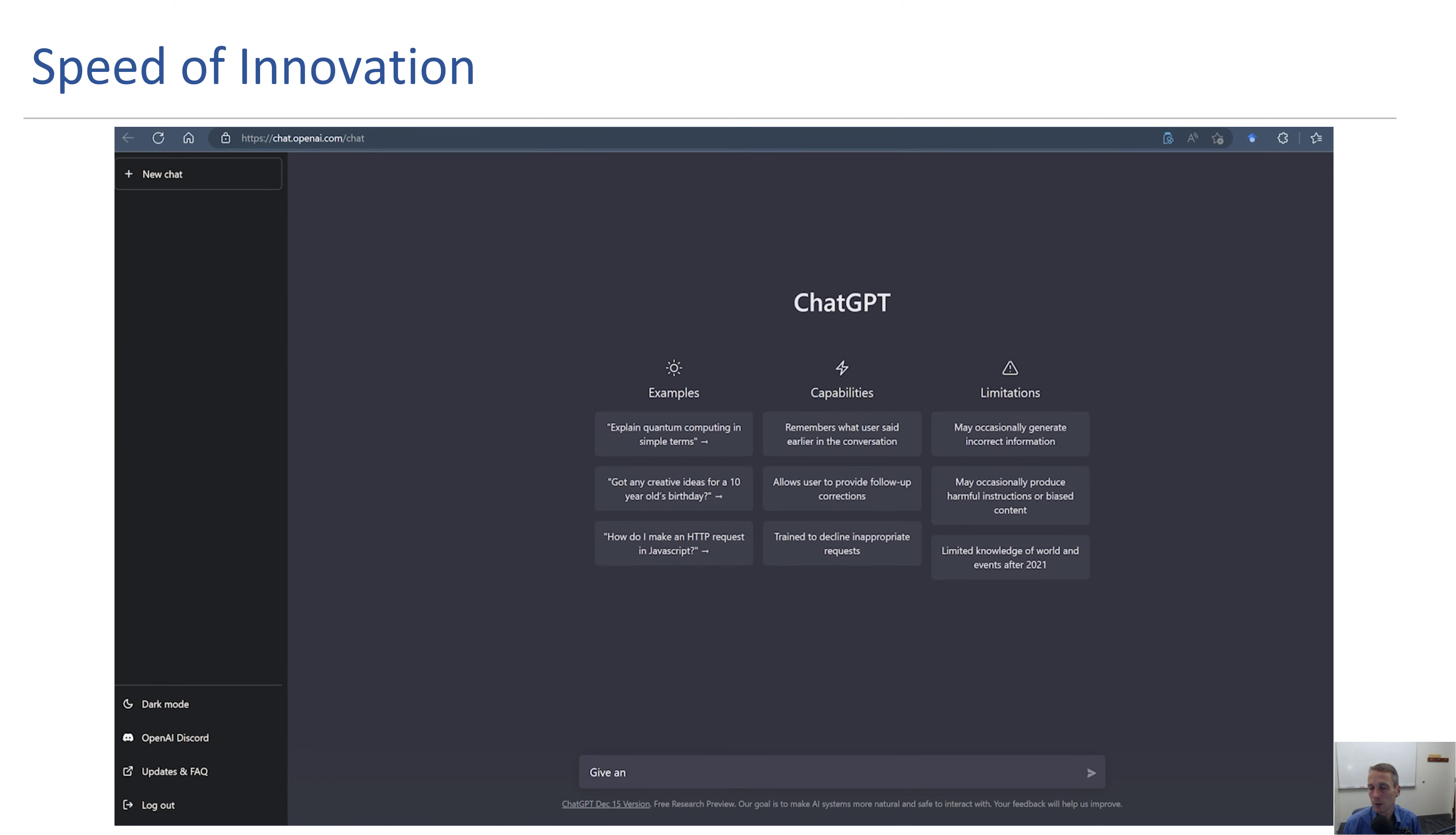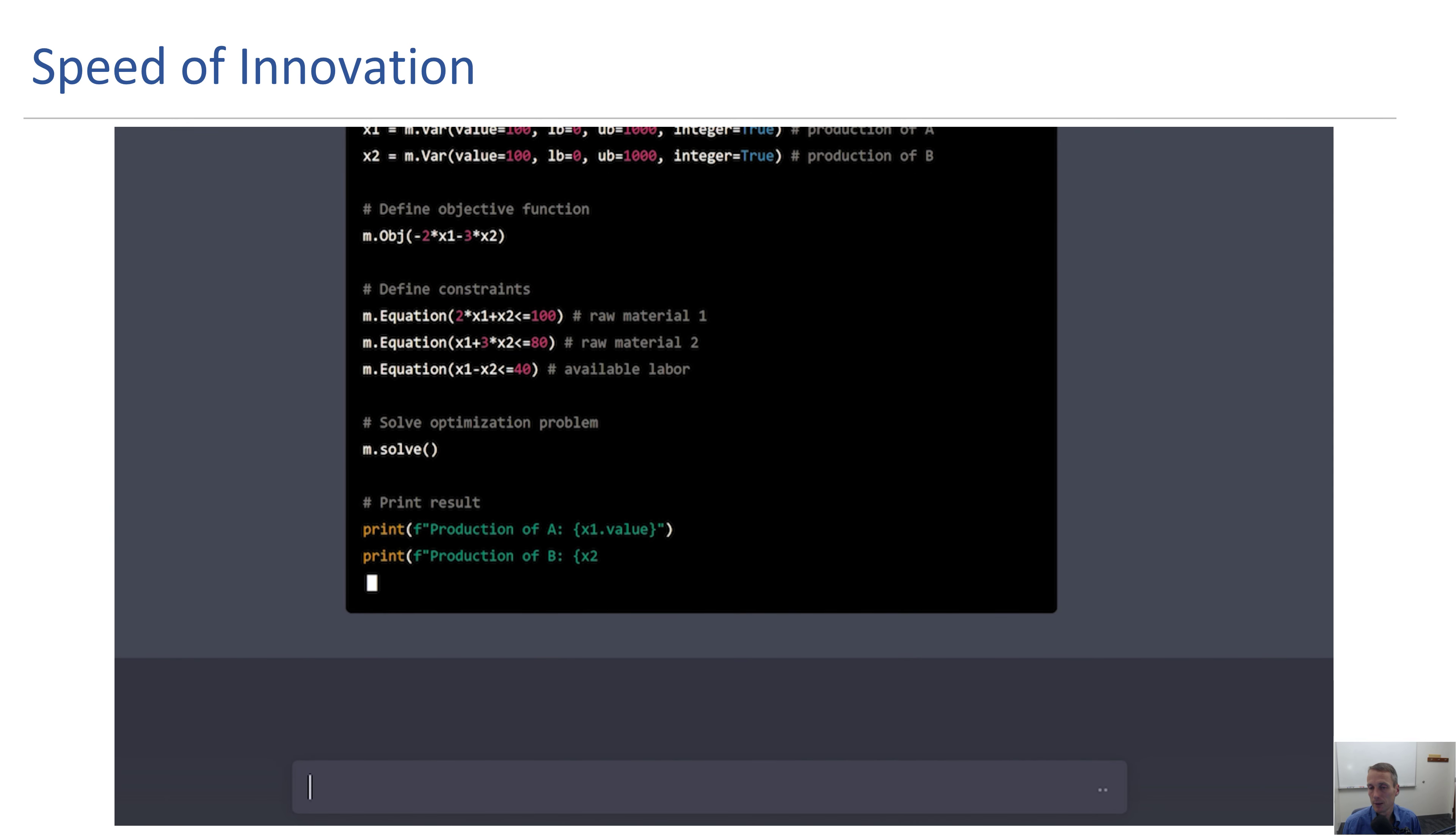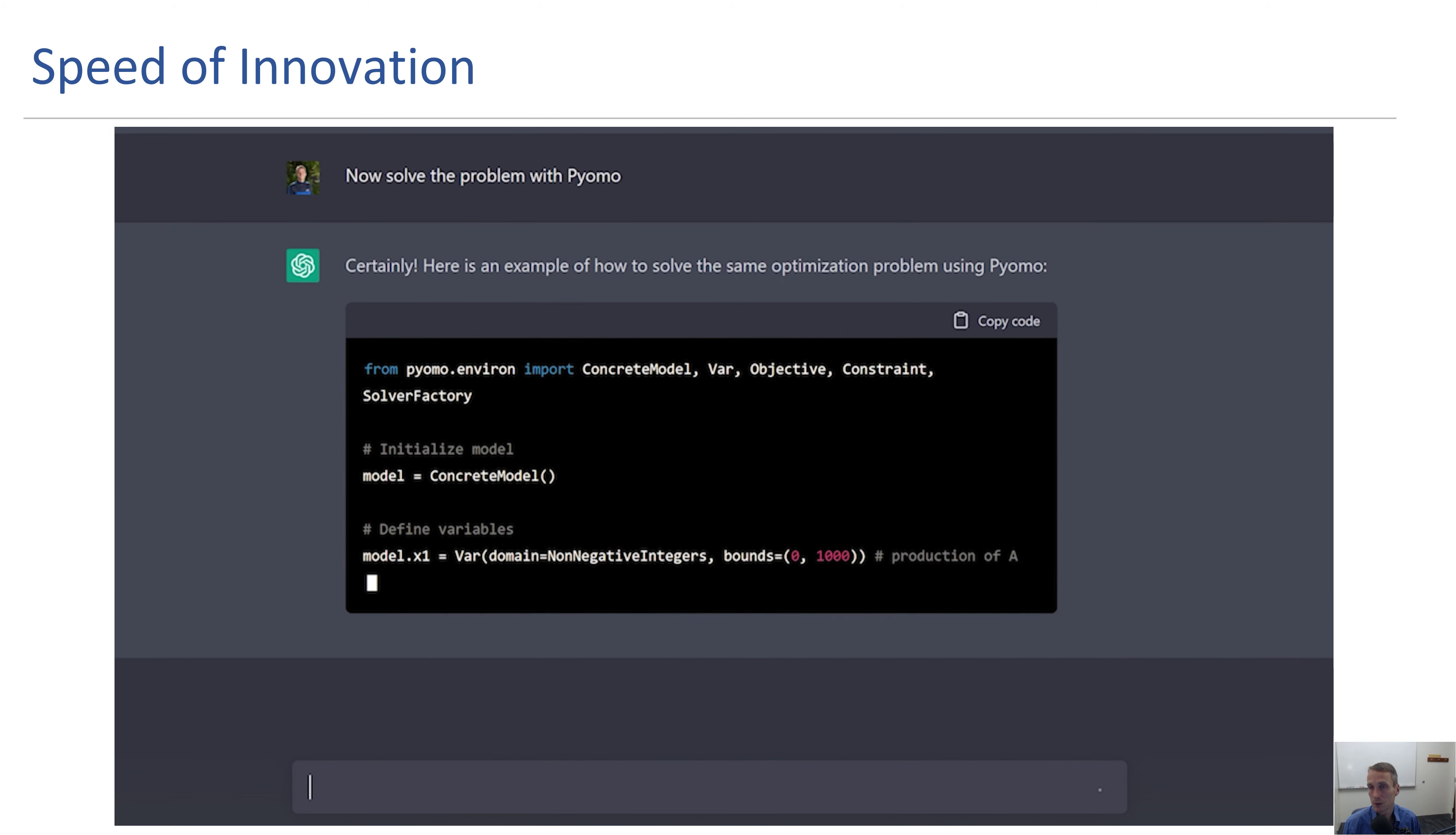Let's talk about the speed of innovation and how that's affecting things. Here's an optimization example in Python using GEKKO. You can see ChatGPT is able to provide an example and then I want to take it one step further. Now solve the problem with Pyomo.